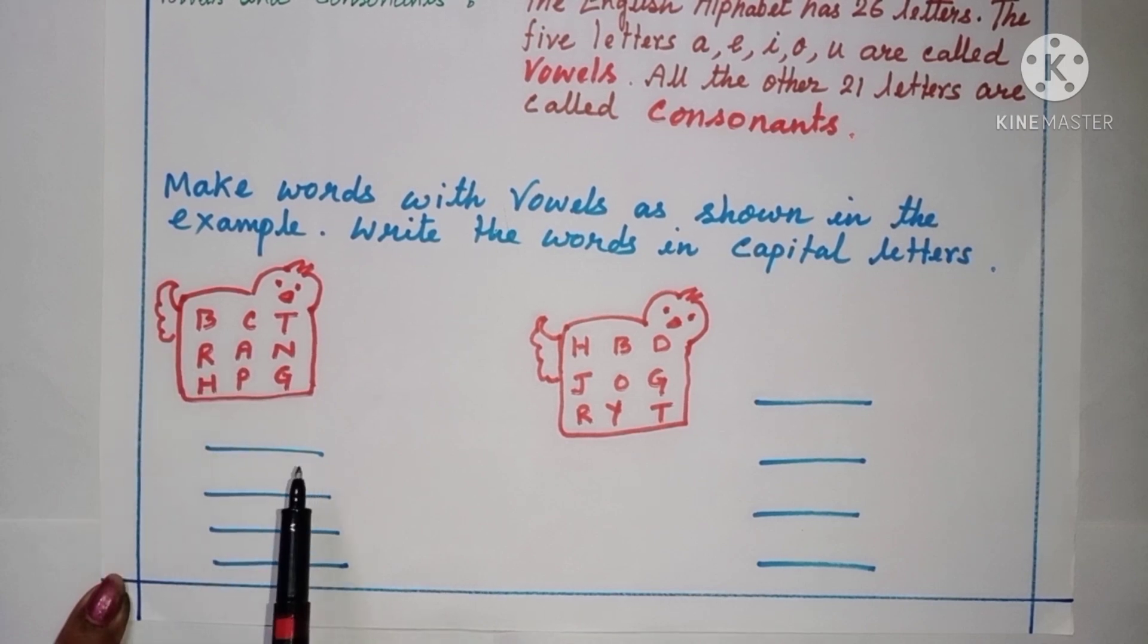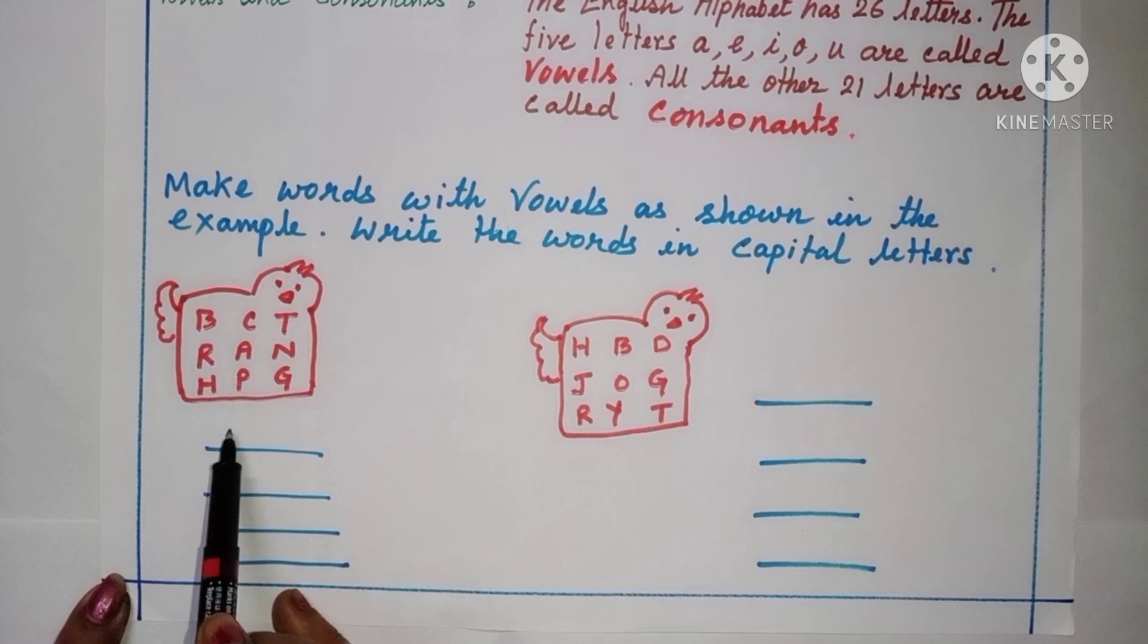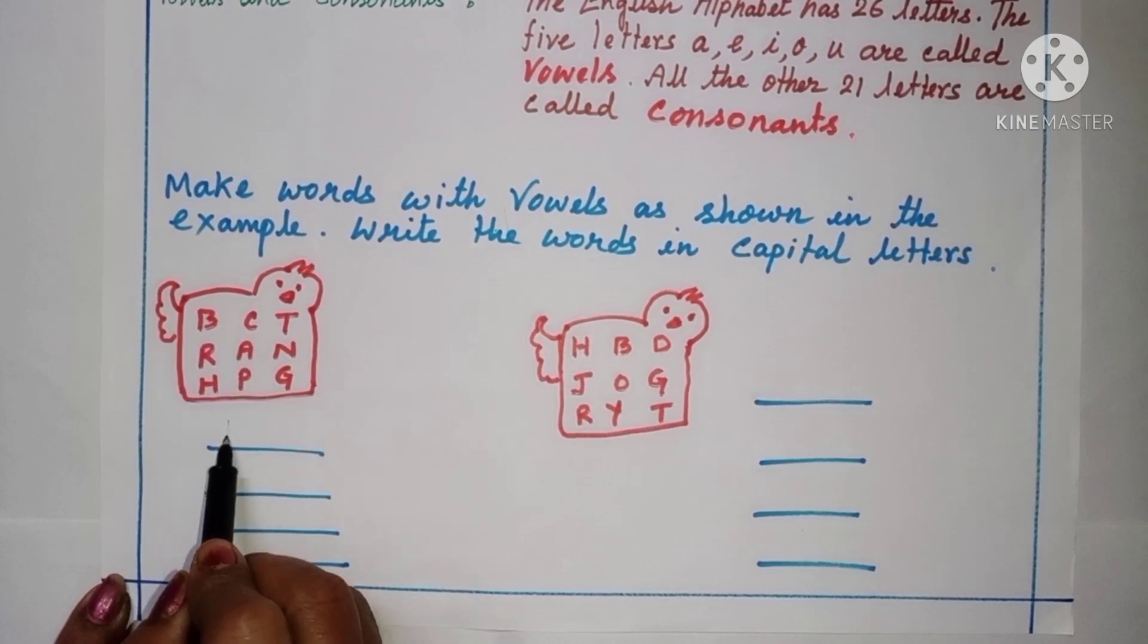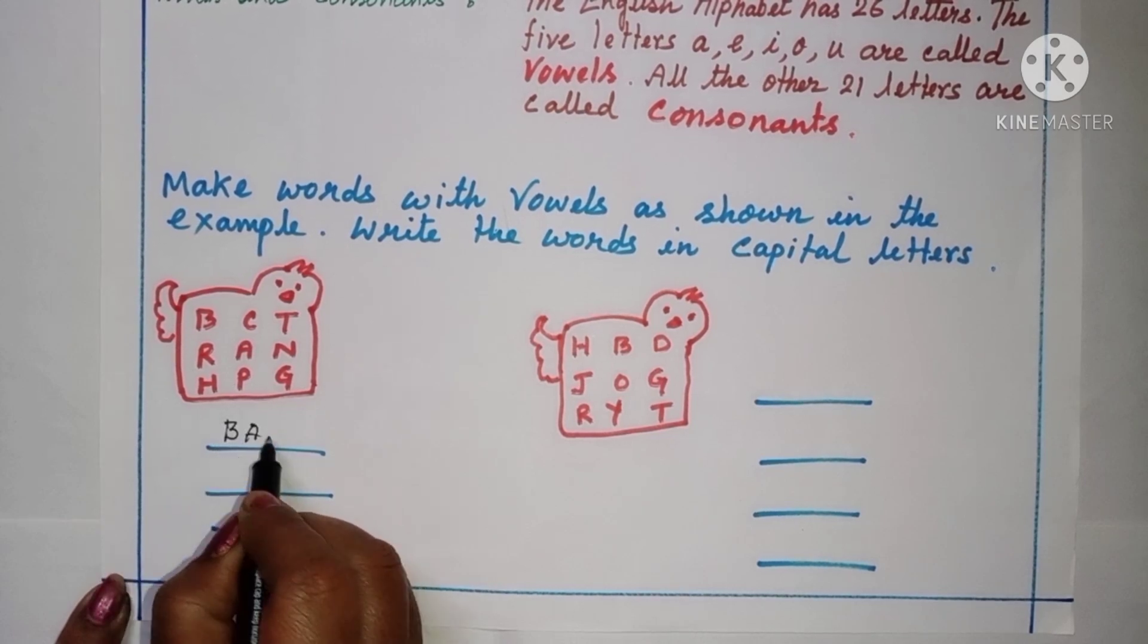So I can make small, small word. What I will make? B, A, G. See, I will write B, A, G. Bag.